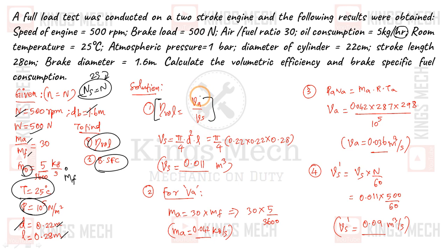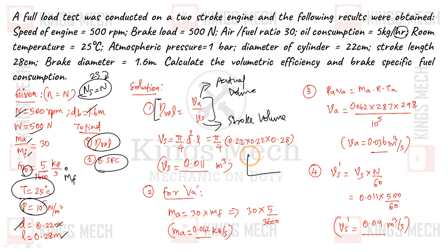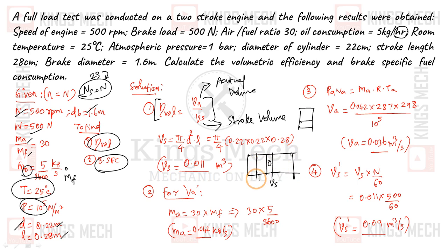Volumetric efficiency is equal to VA divided by VS. VA is the actual volume, and VS is the stroke volume. Stroke volume is the volume of the engine cylinder - the displacement between TDC and BDC. Stroke volume is based on the diameter of the cylinder and the stroke length, using the formula π/4 × D² × L.